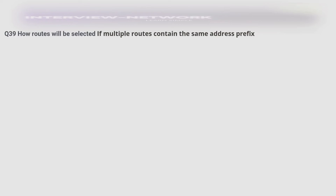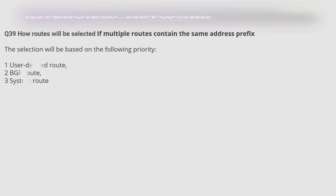How are routes selected if multiple routes contain the same address prefix? The selection will be based on the following priority: 1) User-defined routes, 2) BGP routes, and 3) System routes.